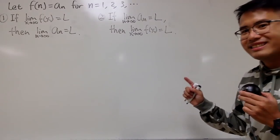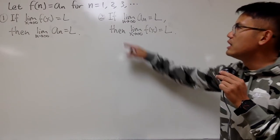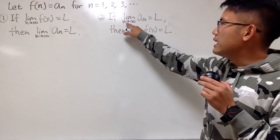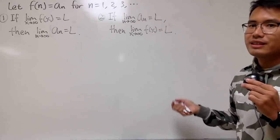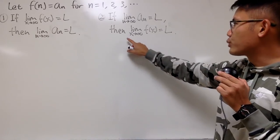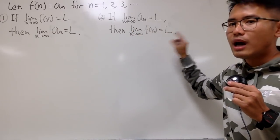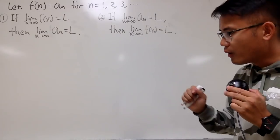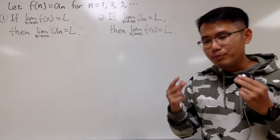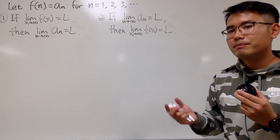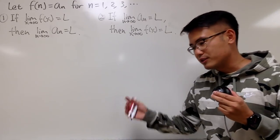The second statement is just the converse of the first one. It says: if you have the limit as n goes to infinity of the sequence equal to L, then can we conclude that the limit as x goes to infinity of the function equals L as well? They sound really similar, and both of them sound really believable. But unfortunately, only one of them is true and the other one is false.